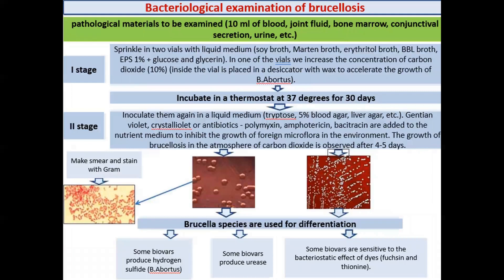Bacteriological examination of Brucellosis: pathological materials include blood, joint fluid, bone marrow, conductive secretion, urine, etc. On the first stage, samples are inoculated in two vials with liquid medium; in one vial the concentration of carbon dioxide is increased, and it is incubated at 37°C for 30 days. On the second stage, inoculation is repeated in liquid medium with gentian violet, crystal violet, or antibiotics such as polymyxin, amphotericin, and bacitracin added to inhibit foreign microflora. Growth of Brucella in CO₂ atmosphere is observed after 4–5 days, then smears are made and stained according to Gram, followed by identification.